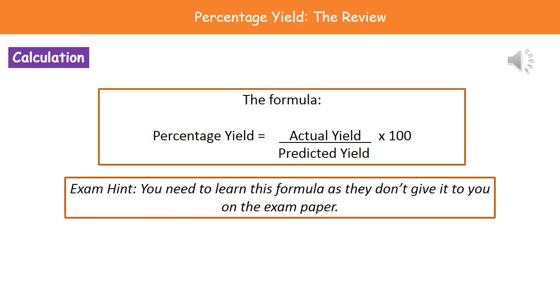So what we can see here is that we've actually got the formula to calculate percentage yield. Now they don't actually give this to you on the exam paper, so you do have to memorize it. Good news is that you can actually just remember it as simply as it's going to be the smaller two numbers in the question divided by the larger two and then multiply that by 100. If you can learn the equation properly, it's going to be the actual yield divided by your predicted yield and times that by 100.